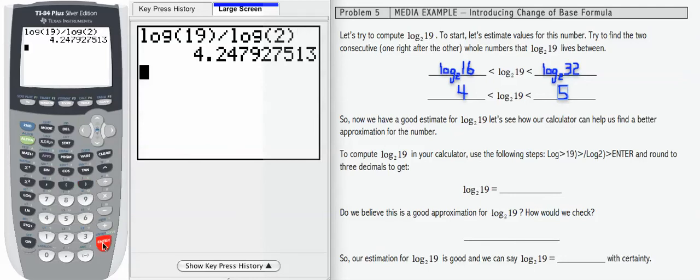In the calculator, I took log 19 divided by log 2, and when I computed I got a result of 4.248 if I round that to 3 decimals. Now we need to check that and make sure we believe that log base 2 of 19 actually is 4.248.